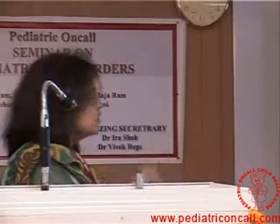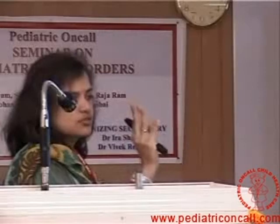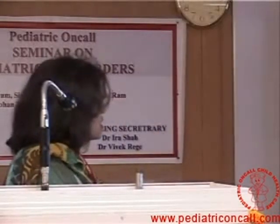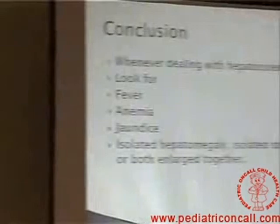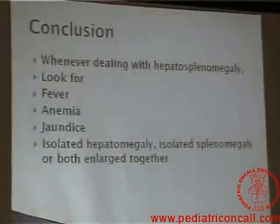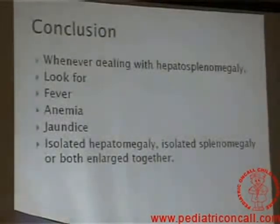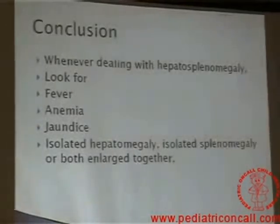Whenever we are dealing with hepatosplenomegaly, look for fever, anemia, and jaundice — and accordingly come to a diagnosis. Look whether it is isolated liver, isolated spleen, or both are enlarged. Remember: fever means reticuloendothelial system or acute hepatitis. Anemia means extramedullary hematopoiesis or bleeding or spleen destruction. Jaundice means liver is not able to conjugate or not able to excrete. Remember it this way and we will be able to identify every patient of hepatosplenomegaly.